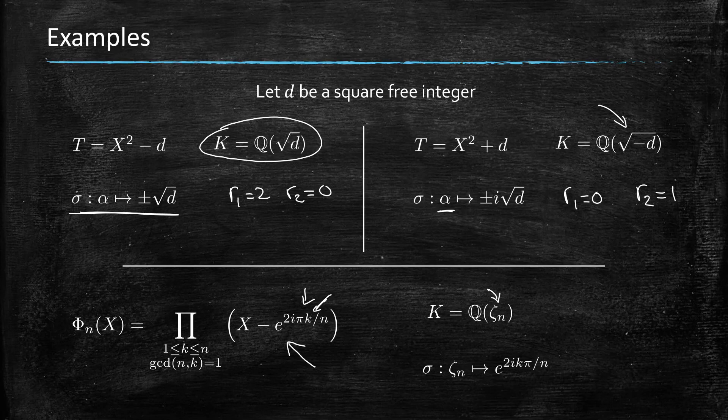And all the embeddings are given by rotating those roots, so mapping the primitive nth root of unity to all the other primitive nth roots of unity that are obtained by basically taking a power of this element.